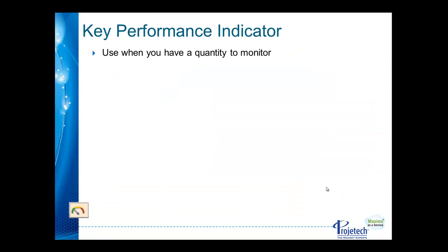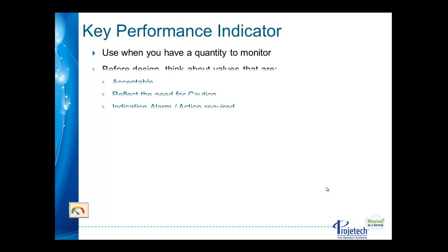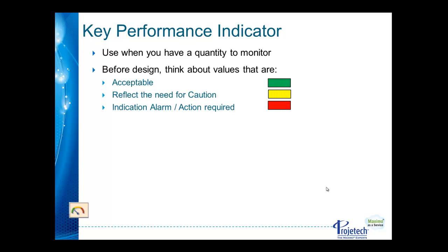For key performance indicators, this is something you will generally use when you have a quantity to monitor — a single number or several individual numbers — and whenever you are thinking about KPIs you should think about what are acceptable values, those values that would require caution, and those that would indicate alarm or that some action is required. Those will display as green, yellow, or red respectively.